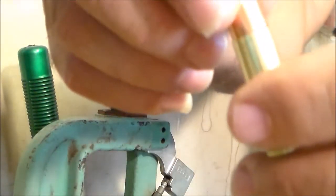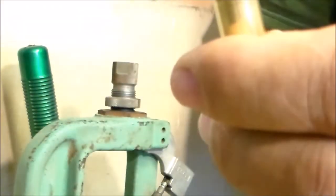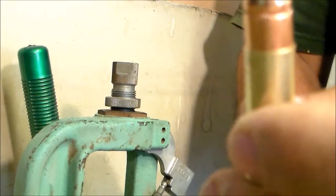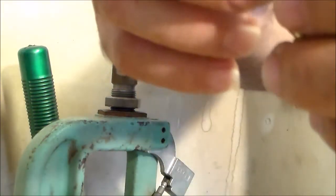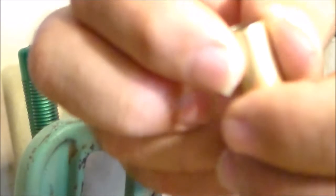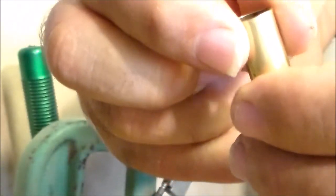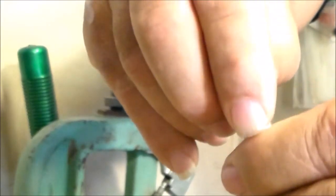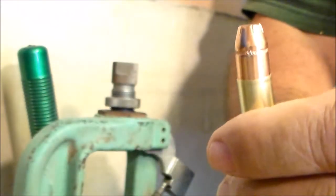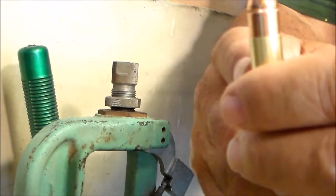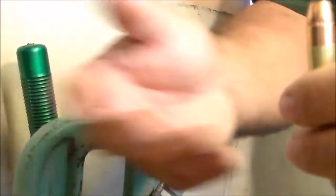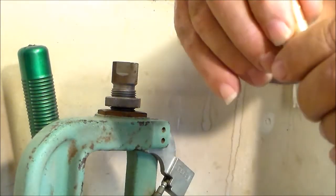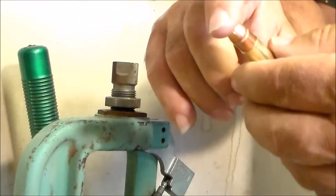That's about perfect right there. It's a very slight bell, it's hardly noticeable. You can barely feel it on the end of the case mouth when you slide your finger over the top. We want to move this brass very minimally, maybe a couple thousandths. We don't want to move it like twenty thousandths or have an exaggerated bell out of the end of the case mouth. It'll shorten the life of the brass.